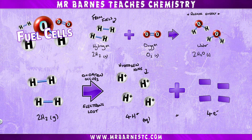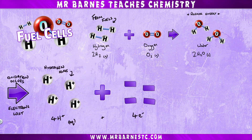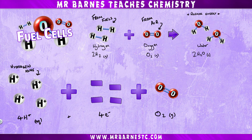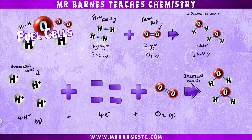These hydrogen ions are then introduced to oxygen, which we get from our air, and a chemical reaction occurs between the hydrogen ions and the oxygen. This is where reduction occurs and the hydrogen gains back its electrons, forming water in the process.